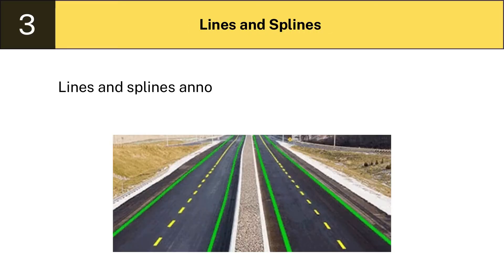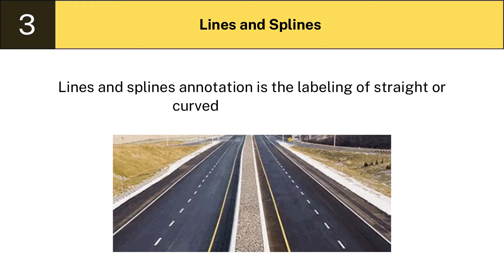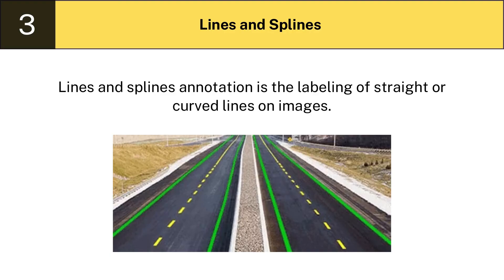Three: Lines and splines. Lines and splines annotation is the labeling of straight or curved lines on images. From autonomous vehicles and drones to robotics in warehouses and more, lines and splines annotations are useful in a variety of use cases.